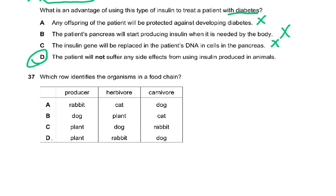Question number 37: Which row identifies the organisms in a food chain? The producer must be a plant — so two options are wrong immediately. The answer is D: plant is the producer, rabbit is the herbivore, and dog is the carnivore.